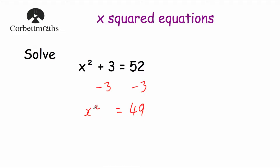Now we want to get rid of the squared, so we're going to square root both sides — but we also want to make sure we don't forget any negative answers. What number squared gives us 49? That's 7, because the square root of 49 is 7. So x equals 7, but also remember it could be negative 7, because negative 7 multiplied by negative 7 is also equal to 49. So x equals plus or minus 7.